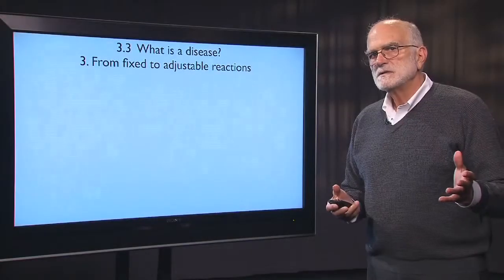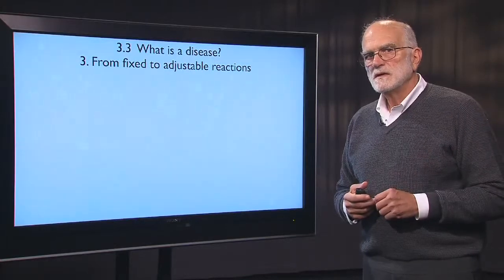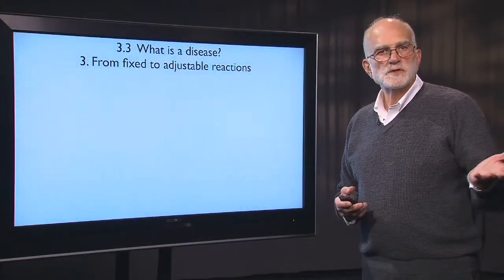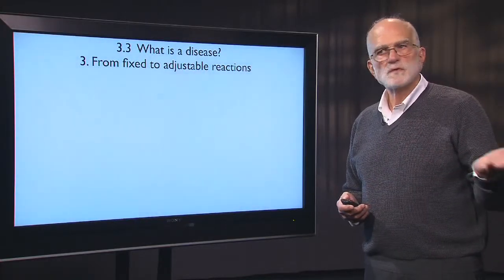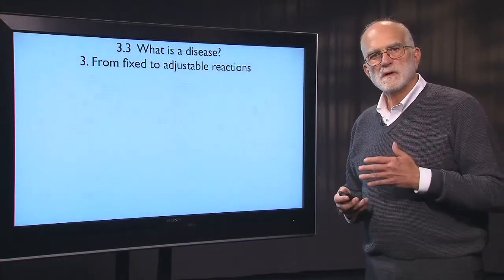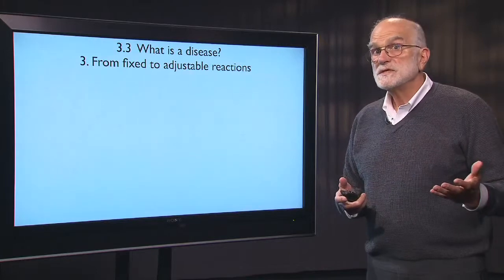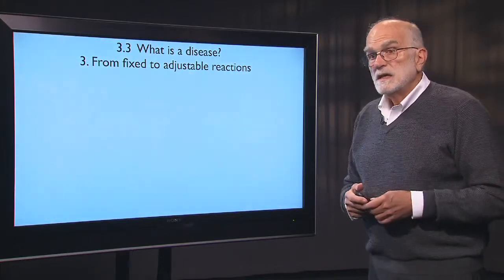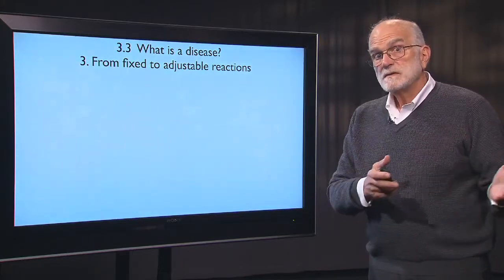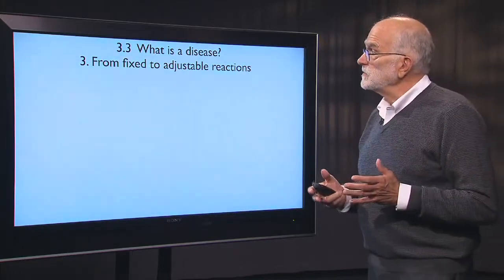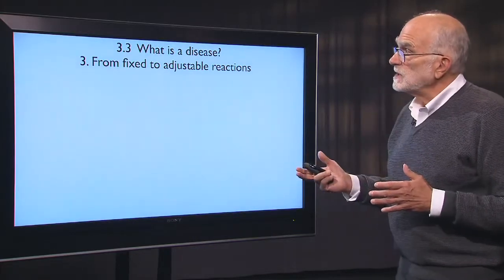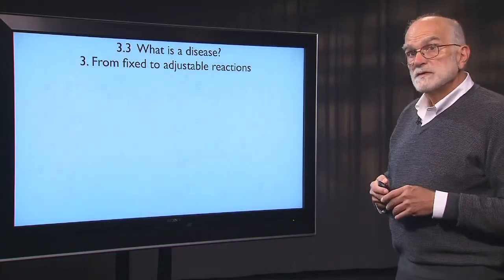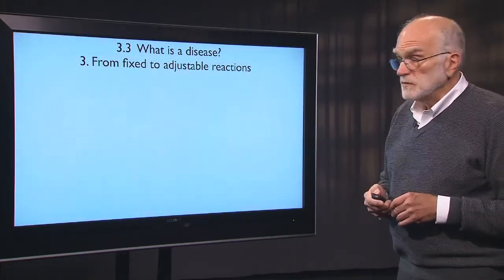We've seen that the body is a mosaic of vulnerable tissues and organs and organs that are more resistant to damage. That is in fact associated with the degree to which reactions are fixed or adjustable.